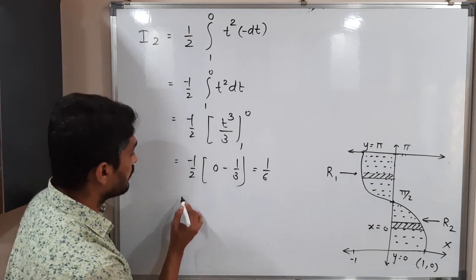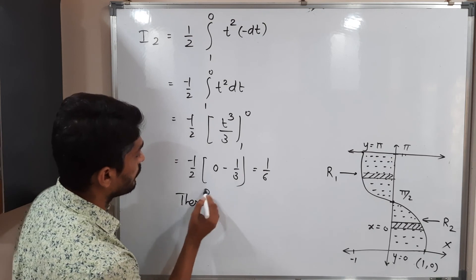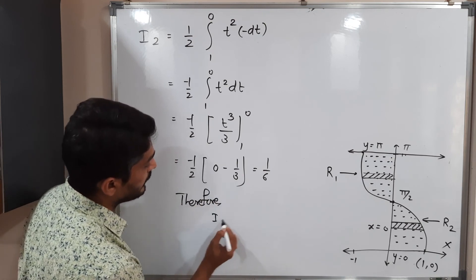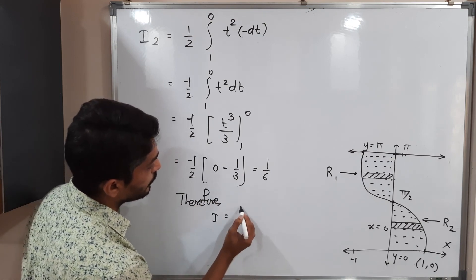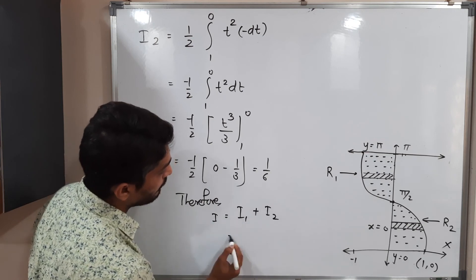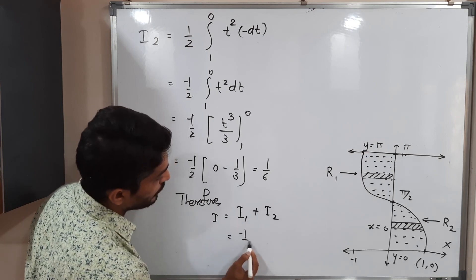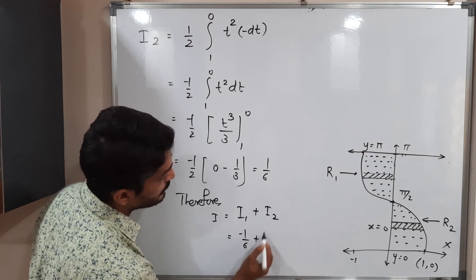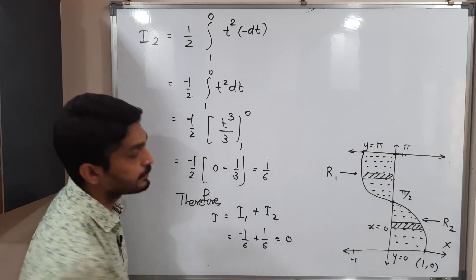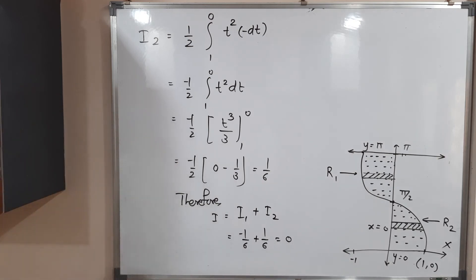Therefore, the required value is I = I1 + I2. I1 was −1/6 and I2 is 1/6. Adding them gives zero. So the required value of the double integration is zero.